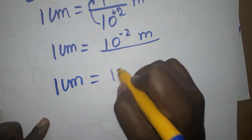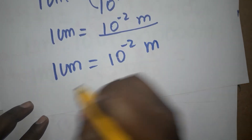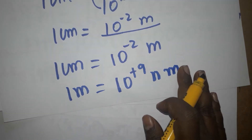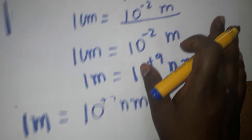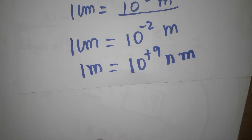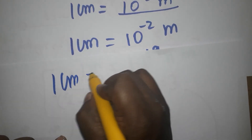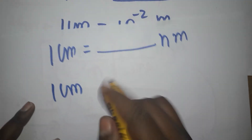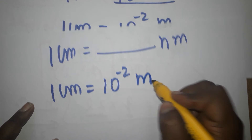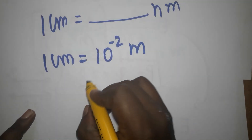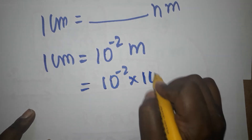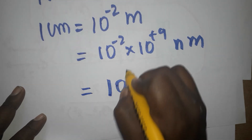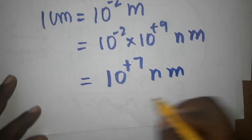Now we have: one centimeter is 10 power minus 2 meters, and we already know one meter is 10 power 9 nanometers. Our question is: one centimeter equals how many nanometers? So substituting: one centimeter is 10 power minus 2 meters, and one meter is 10 power 9 nanometers. Doing this simplification gives us 10 power 7 nanometers.